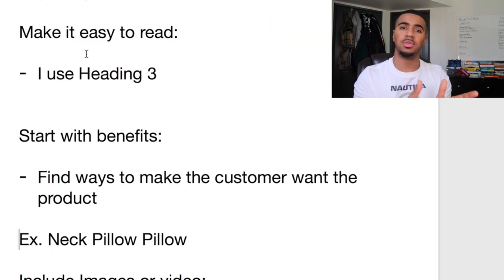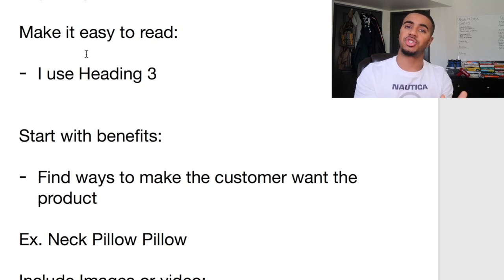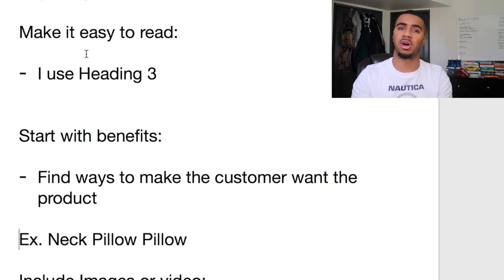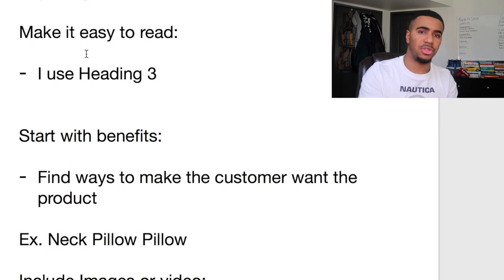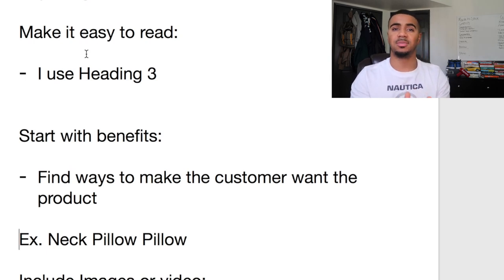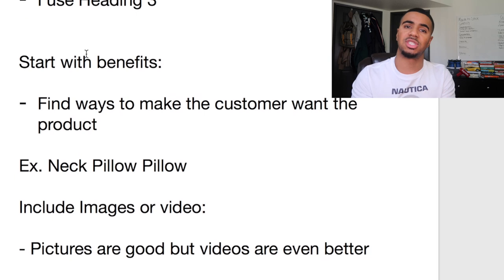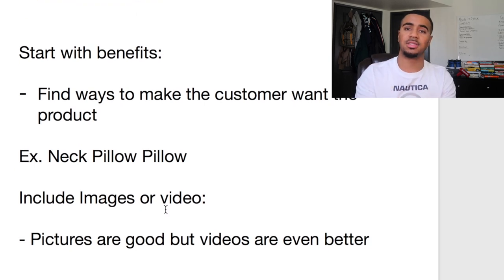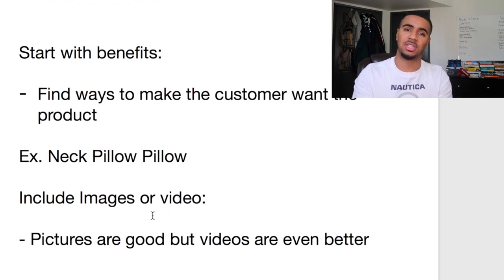You want to make the description custom to the product itself but also to the type of customer you're attracting. Obviously for pillows it's a little more general, but if you have specific niche-related products — like cats, dogs, hiking enthusiasts — you can use things like that to make it custom to those kinds of customers. That way they can see this product makes perfect sense for them. They can relate to it, connect with it, and that's going to make them want it even more.